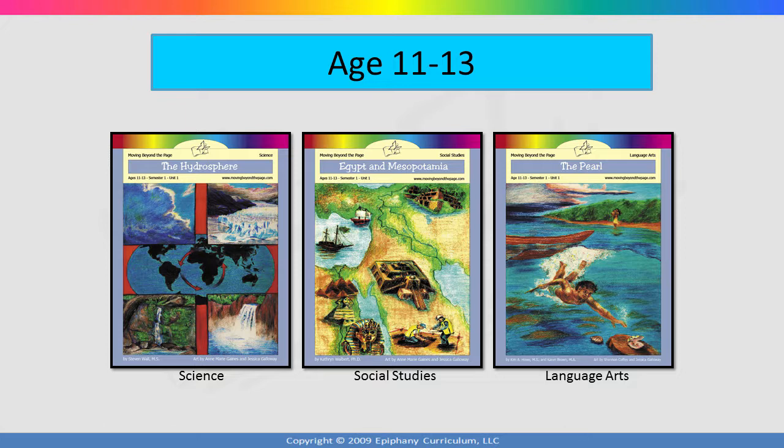Now we are going to switch gears and look at the lessons themselves. We will look primarily at the literature unit called The Pearl. If you are using the online curriculum, you can also follow along — just select and activate the first language arts unit called The Pearl. Everything in the hard copy version is also available in the online version. And one more thing: if you ever need more time with an online unit, please let us know and we will reset your activation for you.